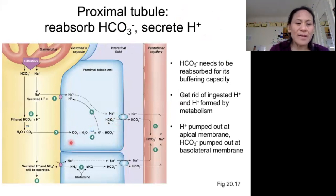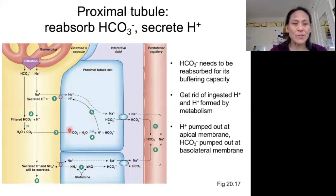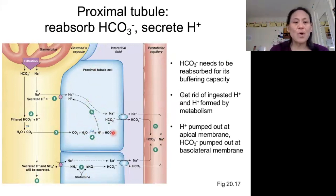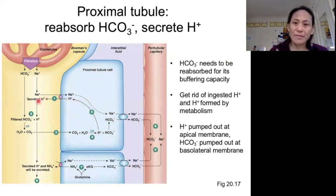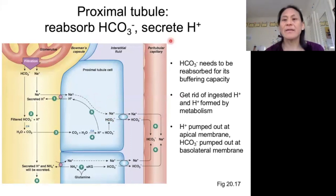So what happens here? Here's the tubule, here is the wall of the tubule, and here is our bloodstream. Inside the wall of the tubule, the epithelial cells that make up that wall, we get our carbonic anhydrase reaction where we take CO2 and H2O and turn that into H+ and bicarbonate. Then what we do is we secrete the H+ into the tubule so that it leaves our body in the form of urine, and then we reabsorb bicarbonate. That's basically how we reabsorb bicarbonate and secrete hydrogen ion.